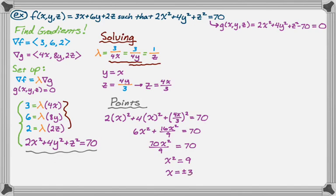If x is plus or minus 3, I want to go back to these relationships I found where I have y equals x and z equals 4x over 3. If x equals 3, I know that y equals 3, and if x equals 3, I know that z equals 4. So I get one point out of that, which I was expecting because if you think about that ellipsoid, the M&M, and you take a plane at a fixed angle, you're going to touch the M&M in two places.